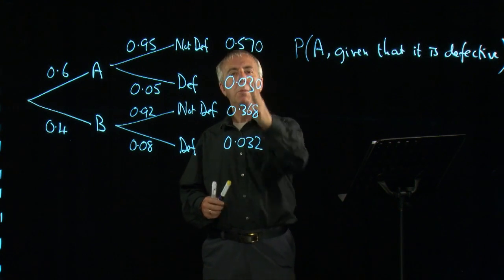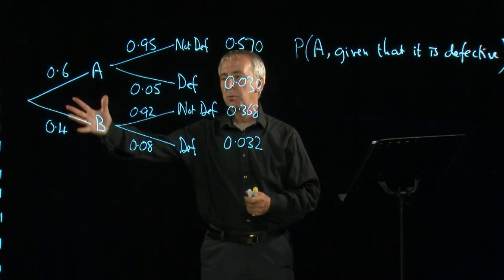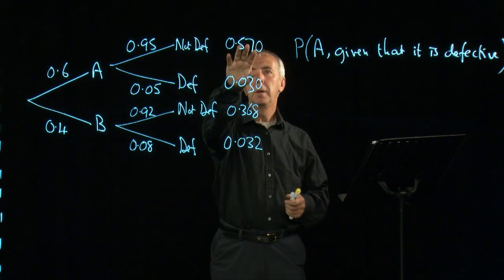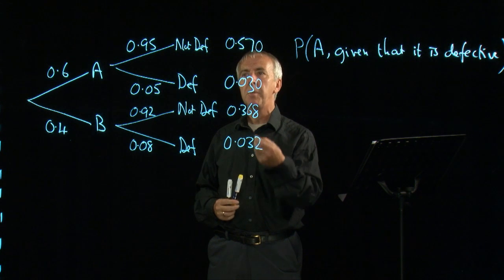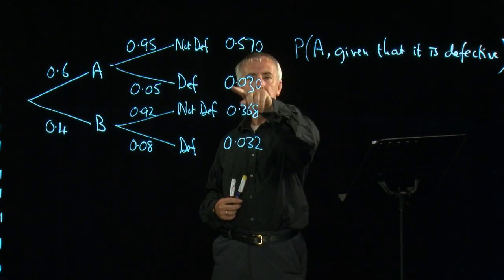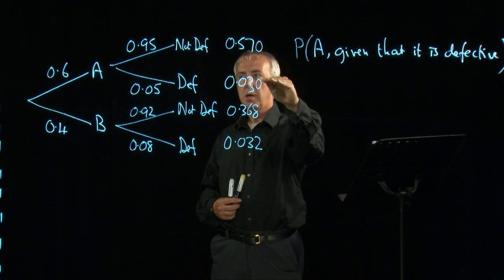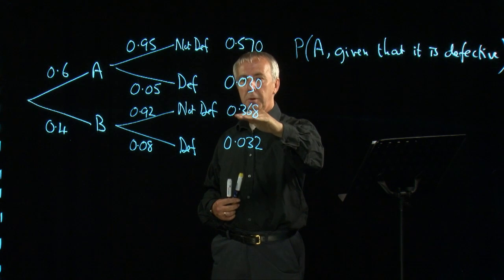Let's think what these probabilities mean. If there were 1,000 items produced all together, this top one tells us that 570 of them came from A and were not defective. 30, multiplying by 1,000, 30 were from A and defective.